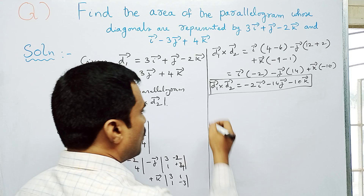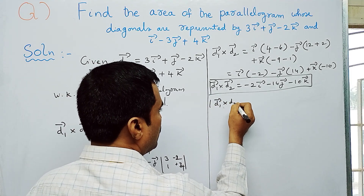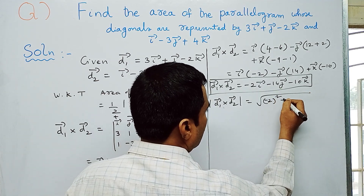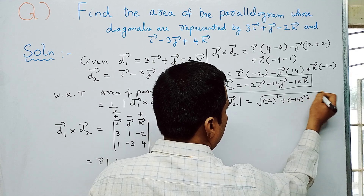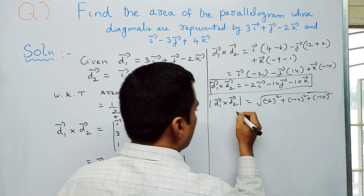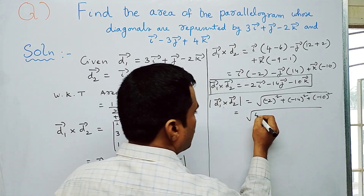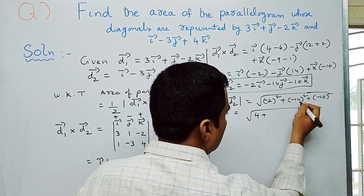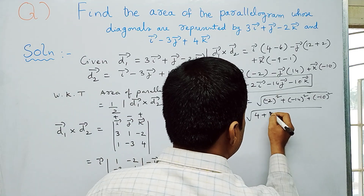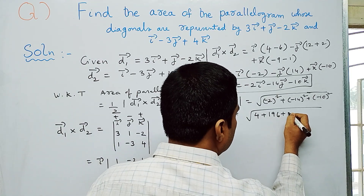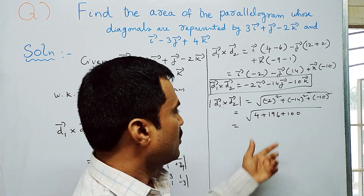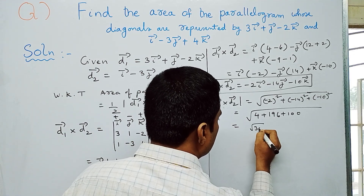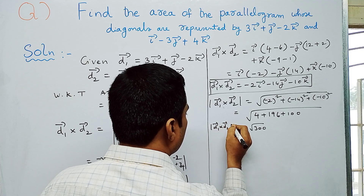Next, find the magnitude: |d1̅ × d2̅| = √((−2)² + (−14)² + (−10)²) = √(4 + 196 + 100) = √300.